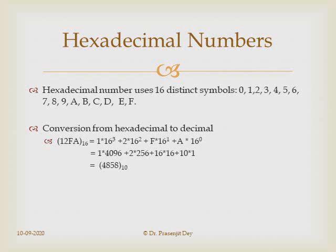To convert a hexadecimal number to decimal, consider 12F. We perform a weighted sum where the weights are powers of 16 (the radix). A is multiplied by 16⁰ — here F is the rightmost digit multiplied by 16⁰ — wait: F × 16⁰ + 2 × 16¹ + 1 × 16² gives the weighted sum. Doing this weighted sum gives the corresponding decimal number, which is 4858.